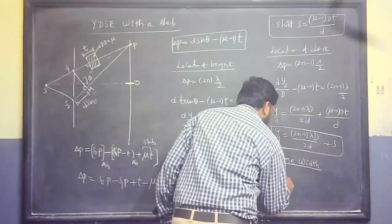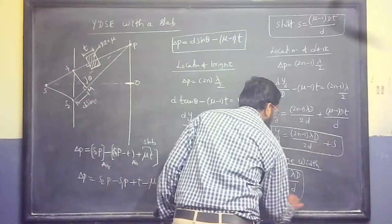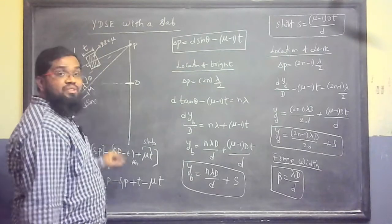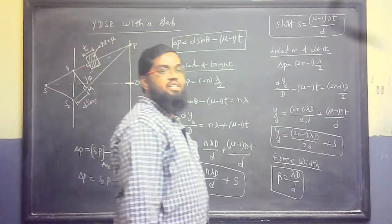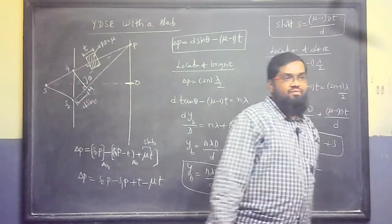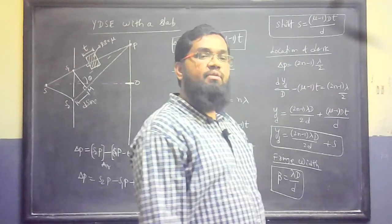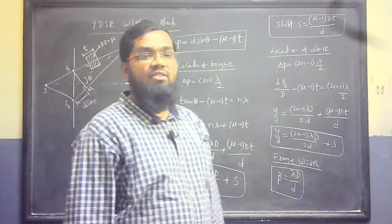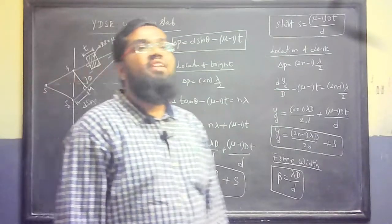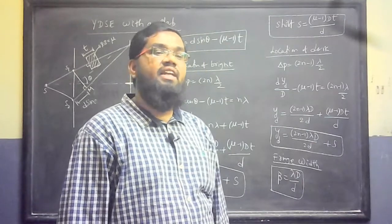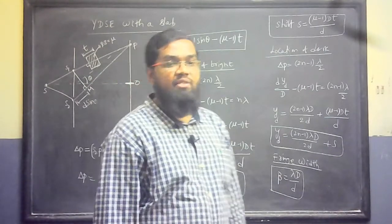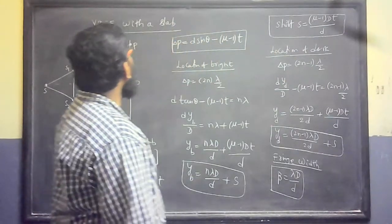Beta is equal to lambda D by D. The question is, central bright, suppose 10 mm. Shift, you know S, you know D, you know D. Mu tells us, T will be unknown. T tells us, mu will be unknown. Refractive index is known, T has to be measured, for example, screw gauge. Mu will not be known. This is the total story of the YDS experiment.